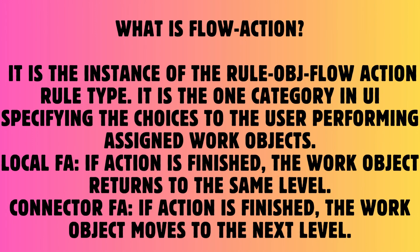Question: What is flow action? Answer: It is the instance of the RuleObj-FlowAction rule type. It is a category in UI specifying choices to the user performing assigned work objects. Local FA: if the action is finished, the work object returns to the same level. Connector FA: if the action is finished, the work object moves to the next level.